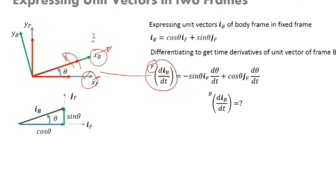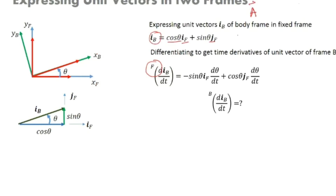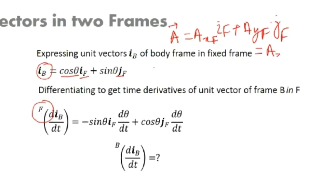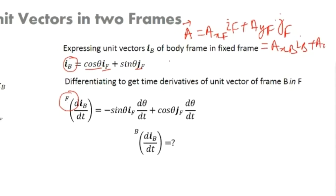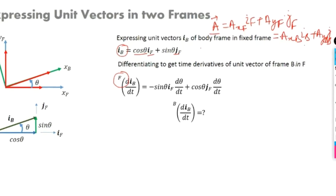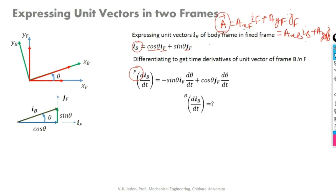When the body-fixed frame is rotating, the situation changes. I can express a vector as AXF times IF plus AYF times JF, or I can express the same vector in two different frames. I can differentiate this vector expressed in F frame with reference to F frame, or I can differentiate the vector expressed in B frame with respect to F frame.